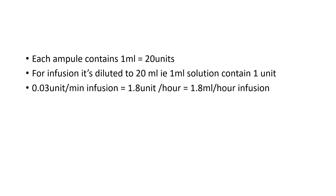Coming to the dilution and infusion of vasopressin: each ampoule contains 1 ml, that is 20 units. It is diluted to a 20 ml solution so that 1 ml will contain 1 unit. To set up an infusion of 0.03 units per minute, that is 1.8 units per hour, the infusion rate will be 1.8 ml per hour.